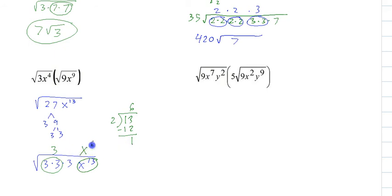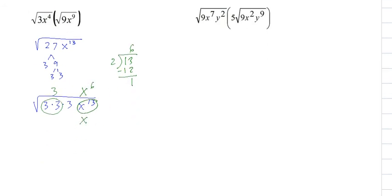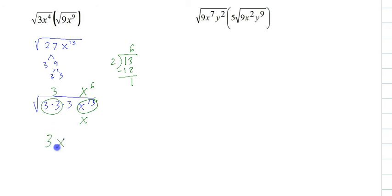So we take out 6, we leave 1 inside, so we get 3x⁶ square root of 3x. And that's it. Alright, try that one - hit pause and give it a shot.